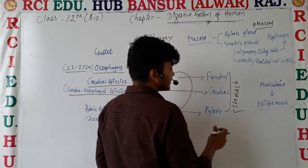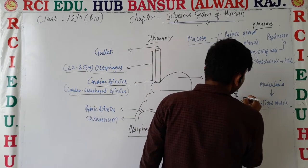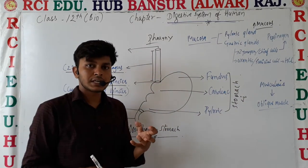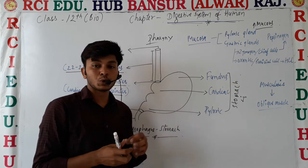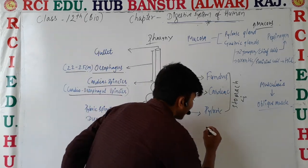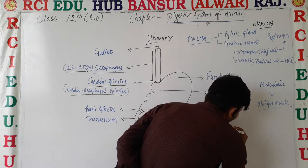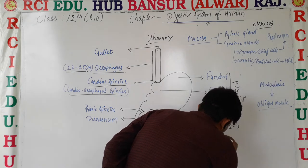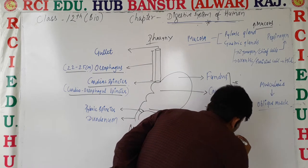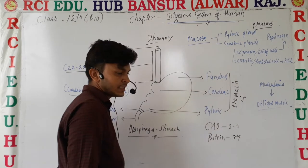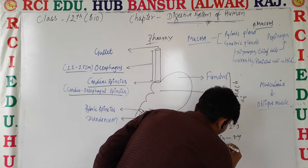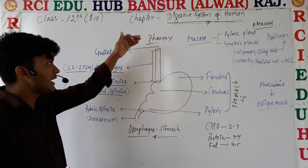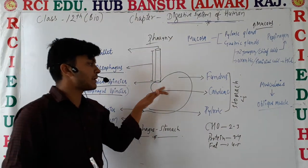After that, we will talk about the stomach. Stomach is a J-shaped, sac-like structure in which food is stored. If we talk about carbohydrates, they stay 2–3 hours. Protein stays 3–4 hours. Fat stays 4–5 hours. So food stays on top of the stomach for varying durations.